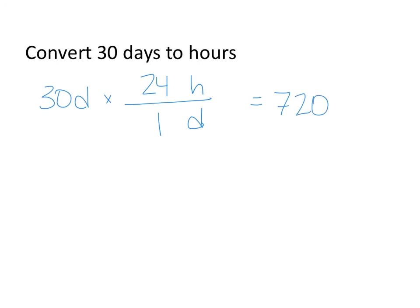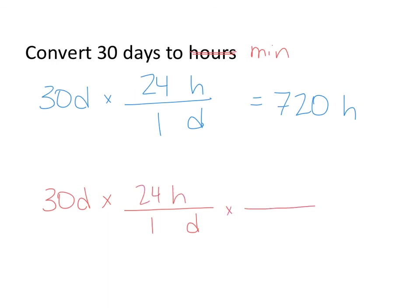...that 30 days is equal to exactly 720 hours. Now let's imagine the question wanted minutes instead. We can use proportional reasoning and do all of this in a single step. We convert 30 days using the fact that one day equals 24 hours, and then apply our knowledge that there are 60 minutes in every one hour. We double-check that days appear in the denominator of the first fraction, and hours appear in the denominator of the second fraction. Typing this entire string of multiplication and division into our calculators, we find that 30 days is 43,200 minutes.